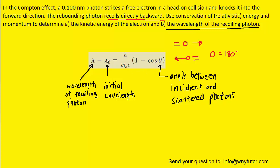The initial wavelength was given to us also as 0.1 nanometers. And then these values right here are constants. So let's go ahead and plug in what we know, and we'll end up solving for the wavelength of the recoiling photon.